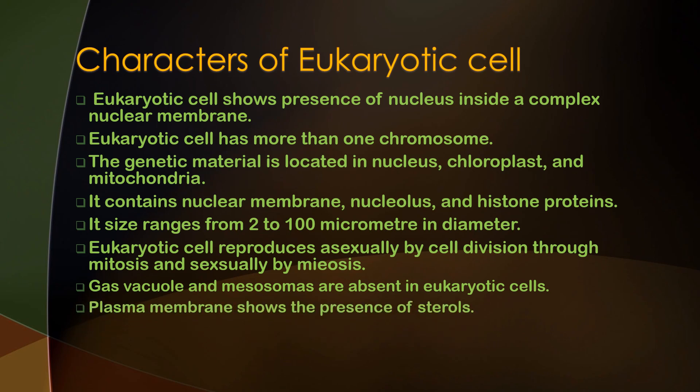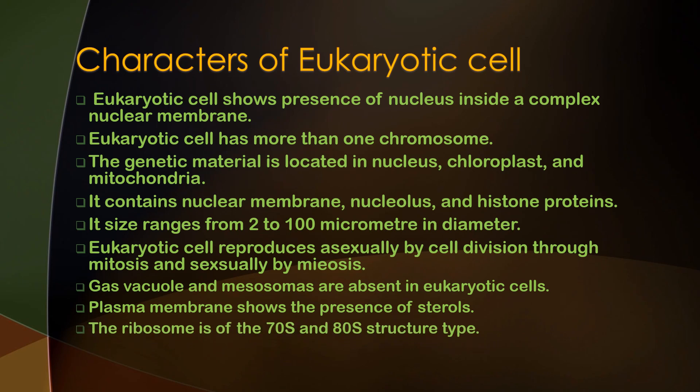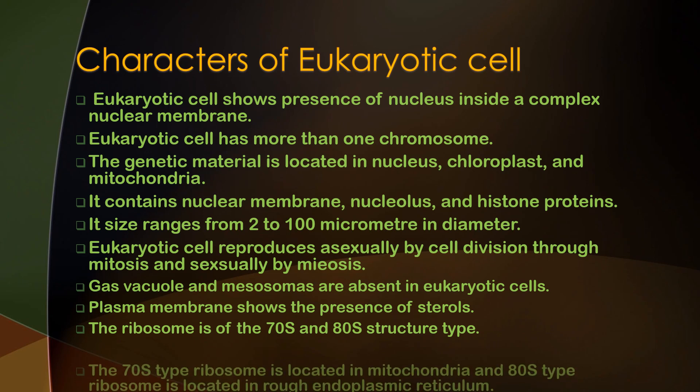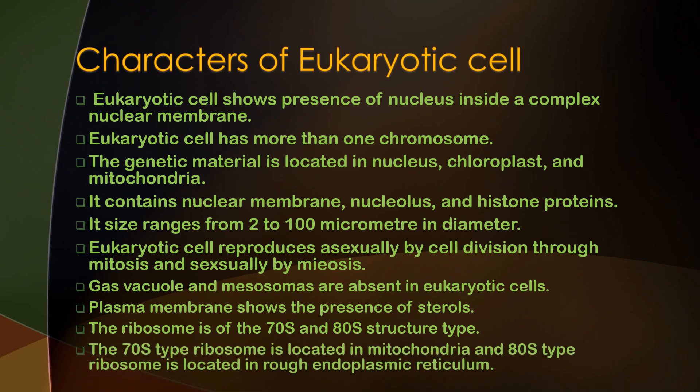Plasma membranes show the presence of sterols. The ribosome is of 70S and 80S structure types. The 70S type ribosome is located in mitochondria, and the 80S type ribosome is located in the rough endoplasmic reticulum.